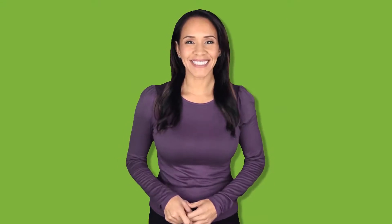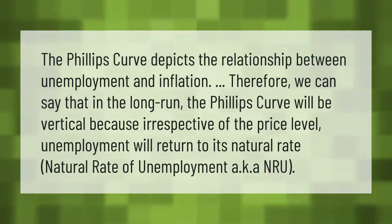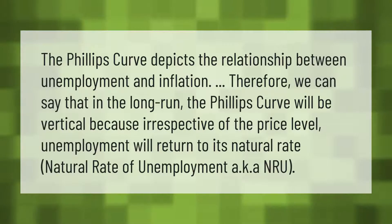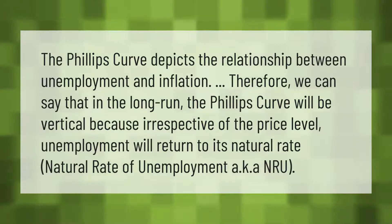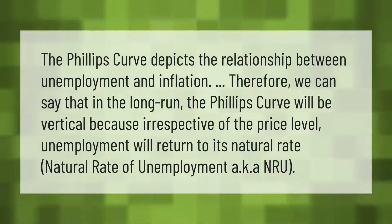The Phillips curve depicts the relationship between unemployment and inflation. Therefore, in the long run the Phillips curve will be vertical, because irrespective of the price level, unemployment will return to its natural rate — the natural rate of unemployment, also known as the NRU.